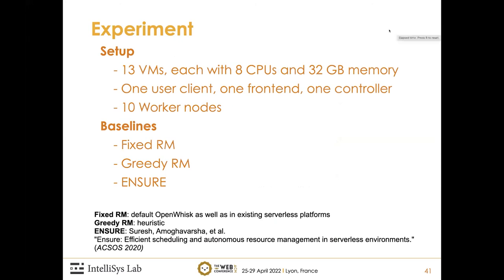We perform realistic experiments on a 13-VM cluster, where each VM has eight CPU cores and 32 GB of memory. One VM serves as a user client node, one as a front-end node, one as a controller node, and the other ten as worker nodes. We have three baselines: a fixed resource manager (the default in existing serverless platforms), a greedy RM (a heuristic greedy-based harvesting algorithm), and the state-of-the-art work Ensure, proposed at ACSOS 2020.